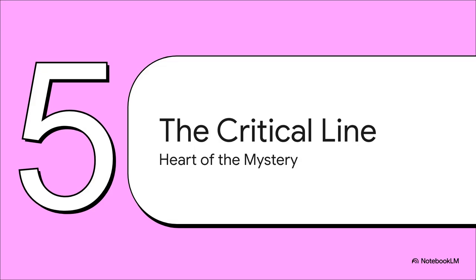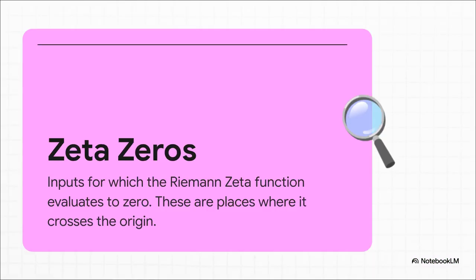So armed with this powerful new 2D number plane, Riemann realized he could totally transform Euler's function. Instead of just plugging in regular numbers and getting a simple output, he could explore this vast, complex landscape. And he wanted to map it. He asked, what does this landscape look like when you explore it with complex numbers? Using a clever technique called analytic continuation, Riemann stretched the zeta function across this entire landscape. And as he explored, he found these very specific locations, these special points on the map, where the landscape's elevation dropped all the way down to exactly zero. Think of them like points at sea level on this wild, complex terrain. And these are the famous zeta zeros.